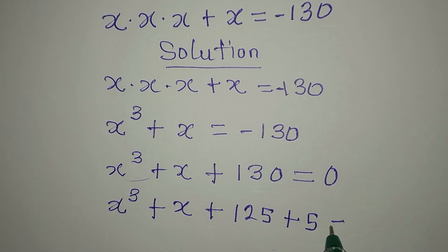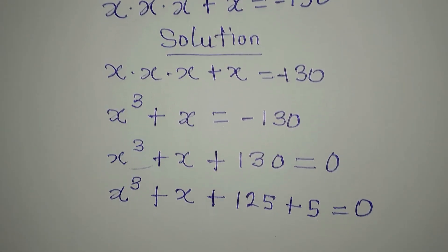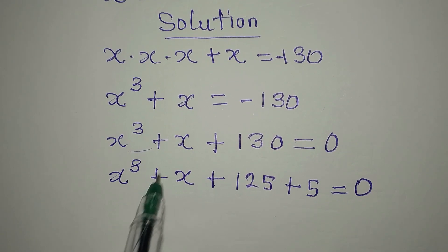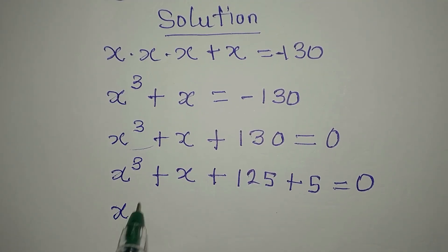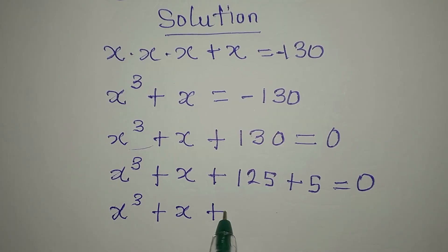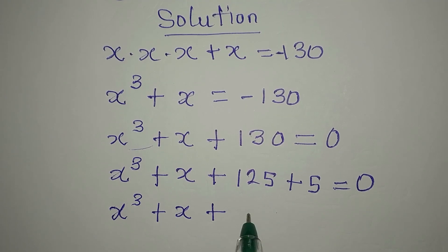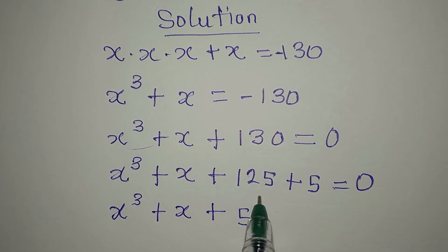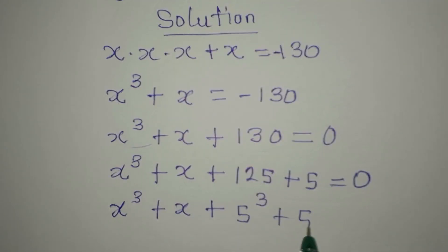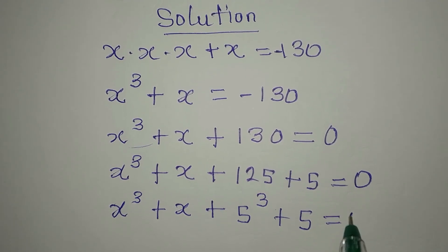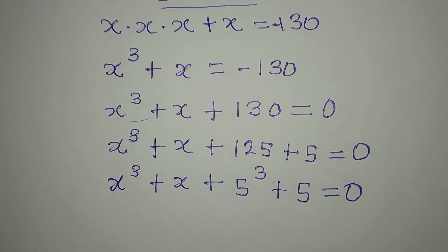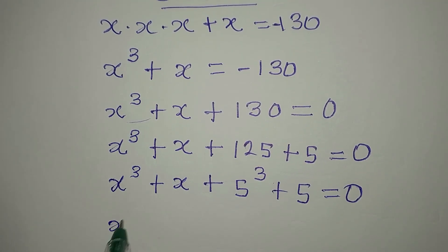And that is equal to zero. Now do you know that this can be written in this form? So we have x to the power of 3 plus x, then plus 125, which is 5 to the power of 3, then plus 5, and everything equals zero.